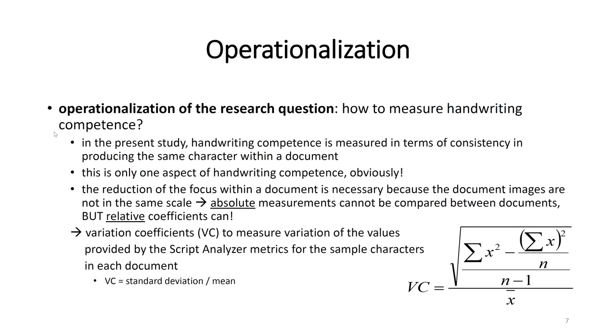Handwriting competence can be defined in several differing ways. In this study, I decided to focus on one aspect of the scribe's handwriting skills, namely their consistency in producing the same character within a document. This decision was partly dictated by necessity because my document images are not in the same scale. And therefore, the absolute measurements of individual characters can be meaningfully compared between documents. And this is why the metrics that are used must be relative. So I will use the variation coefficients of the values of the handwriting metrics produced by script analyzer. A variation coefficient is a standardized measure of dispersion of a distribution, a kind of relative standard deviation.